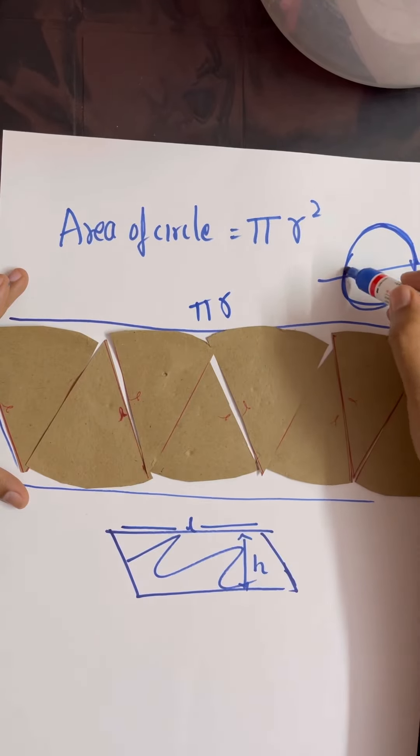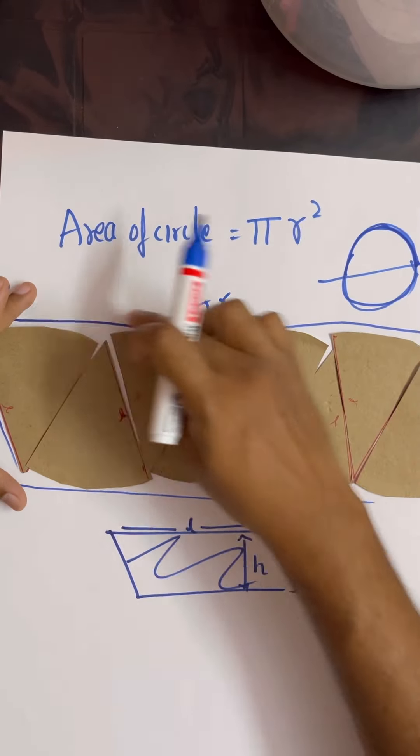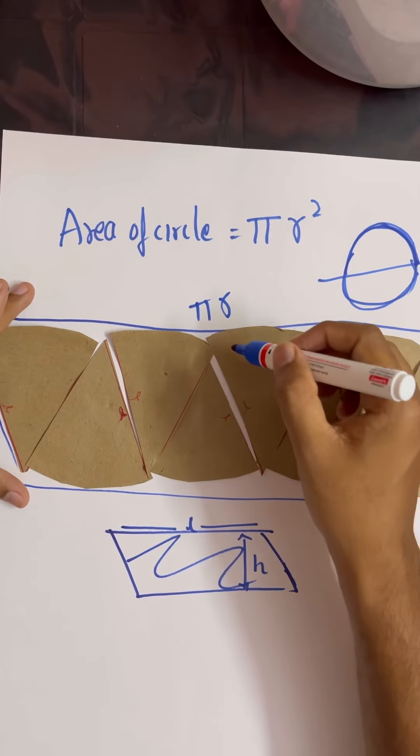Now what is the height? You can clearly see the height is nothing but the radius.